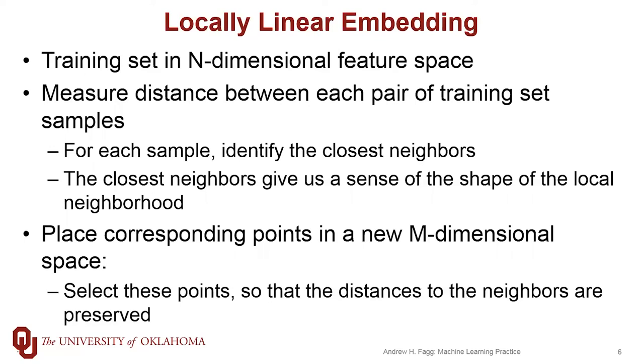So the locally linear embedding approach, the outline looks like this. As we've already been discussing, we start in an n-dimensional feature space, and then we go about measuring the distance between each pair of points in the training set. For each sample, then, we identify the closest neighbors based on this distance measure, and usually we're working with a Euclidean distance measure there.